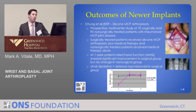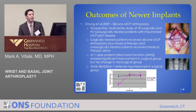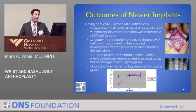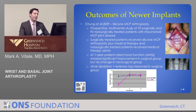Regarding newer implant outcomes: Chung in 2009 published a prospective multi-center study — not randomized — of 70 surgically treated patients and 93 non-surgically treated patients with rheumatoid MCP joint arthritis. The surgically treated patients actually did better. At one year, they had significant functional improvements — they started at a lower baseline but eventually reached significant improvement, reaching the level of their medically treated cohorts. Ulnar deviation and extensor lag also improved, which may result in functional gains.